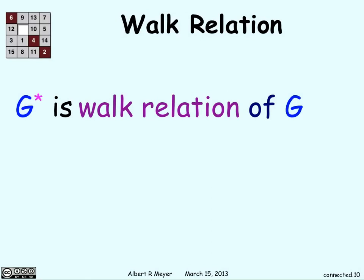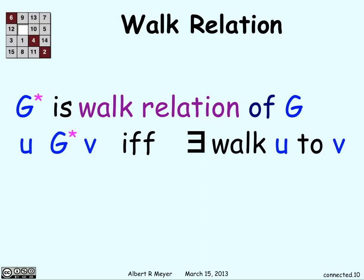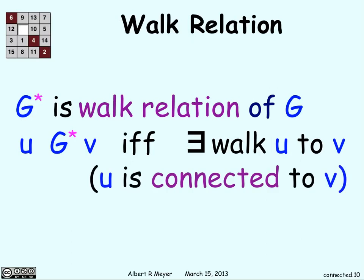Now let's define another relation. G* is called the walk relation of g. And basically, g* applies from u to v if there is a walk from u to v, no matter how long it is. If you can find some way to get from u to v, then it applies.